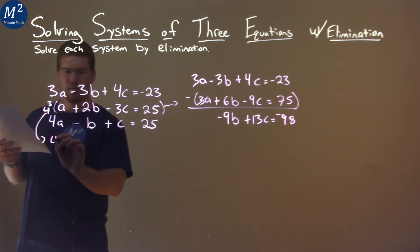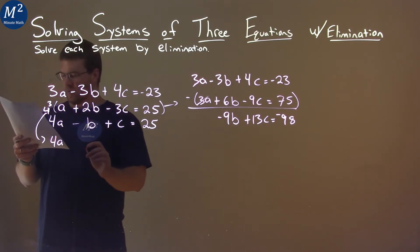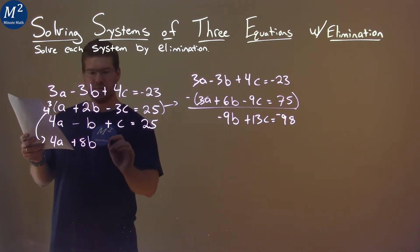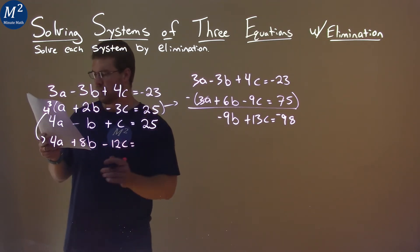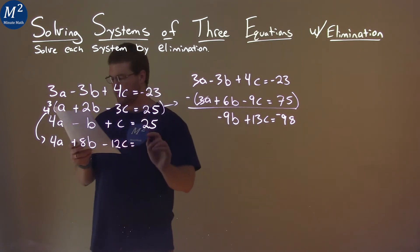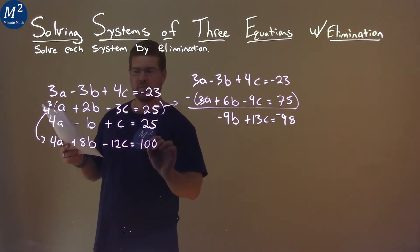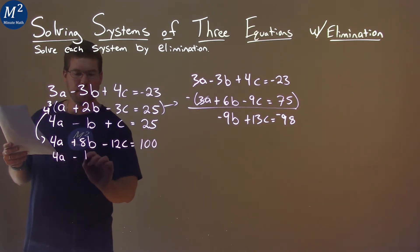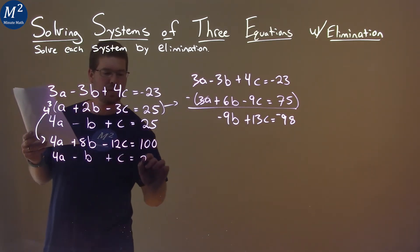4 times A is 4A, 4 times 2B is plus 8B, and 4 times negative 3C is negative 12C, and that is equal to 4 times 25, which is 100. Bring down the second equation below it: 4A minus B plus C equals 25.